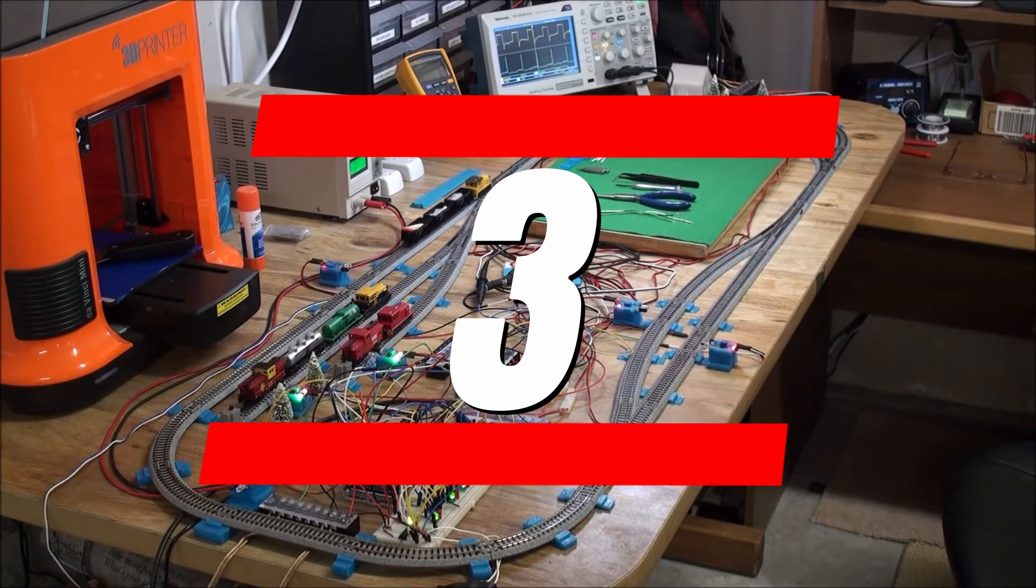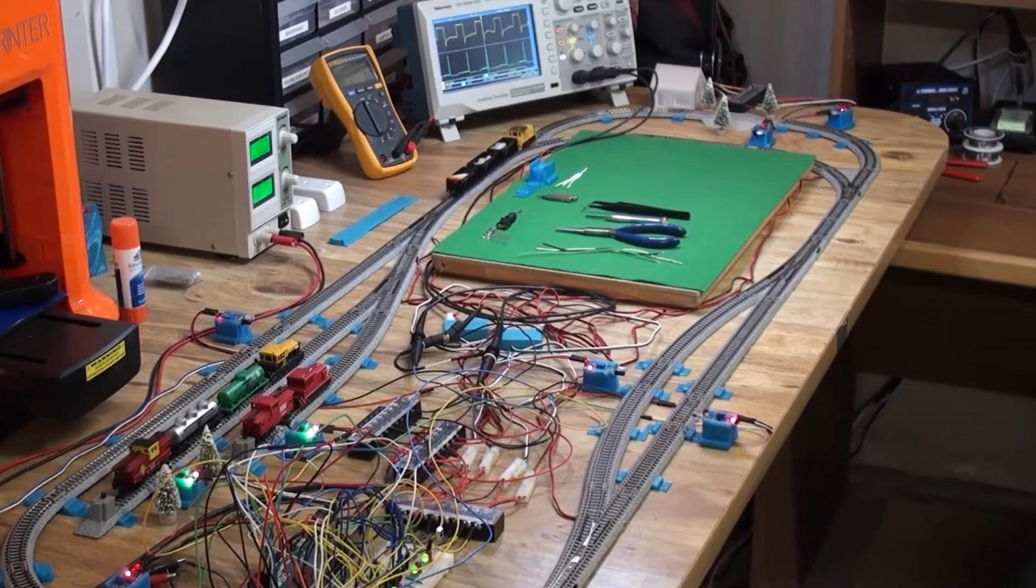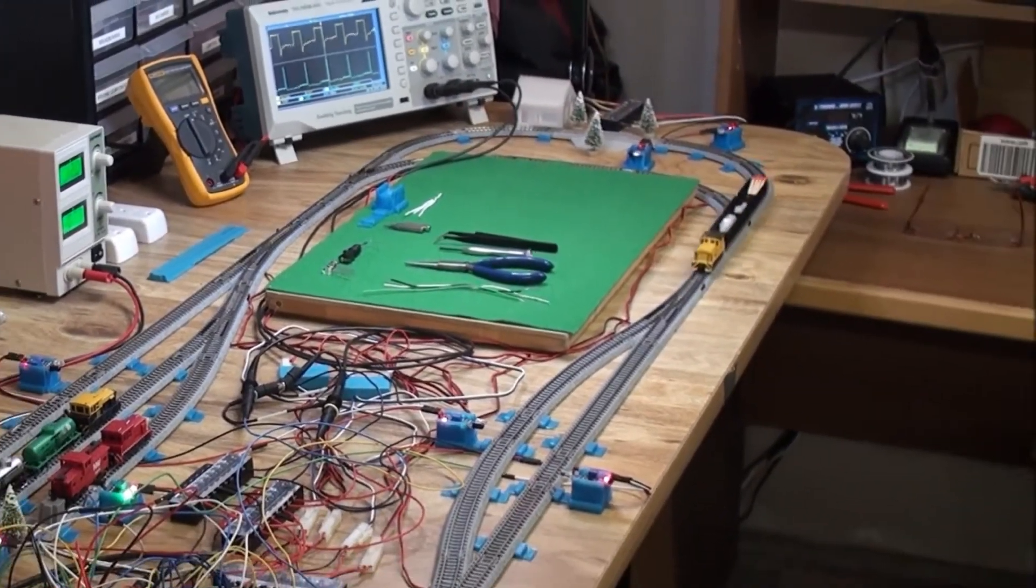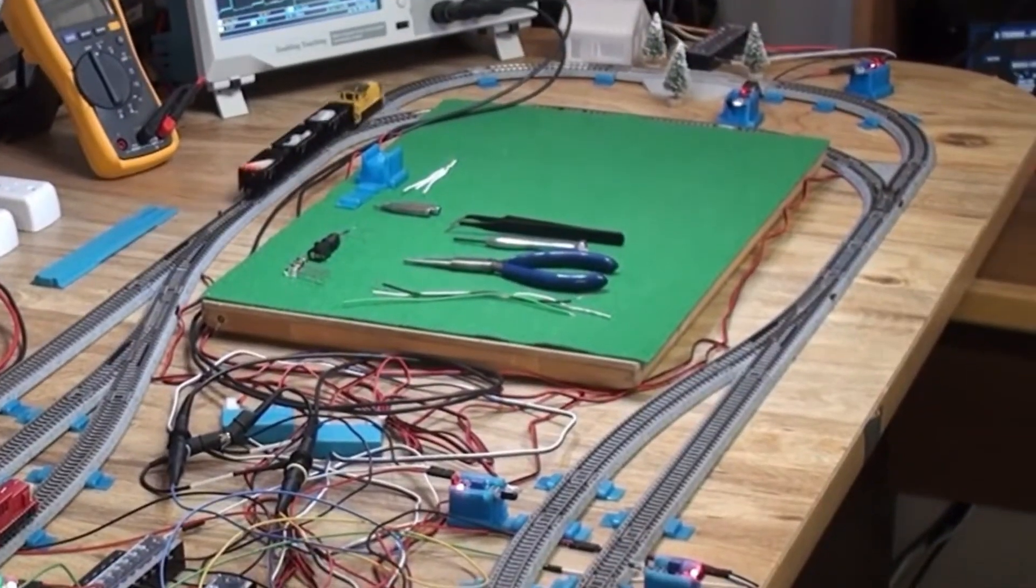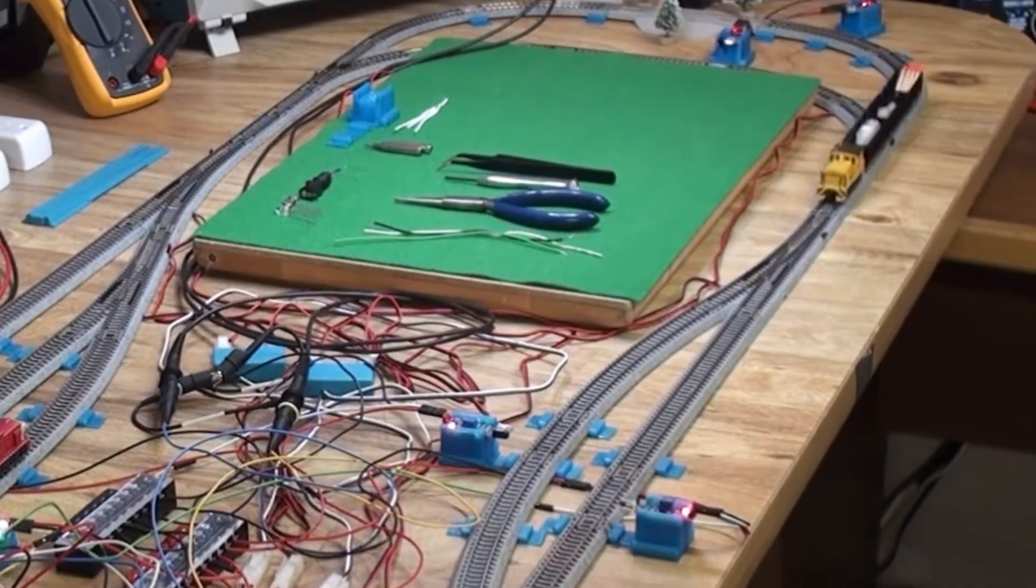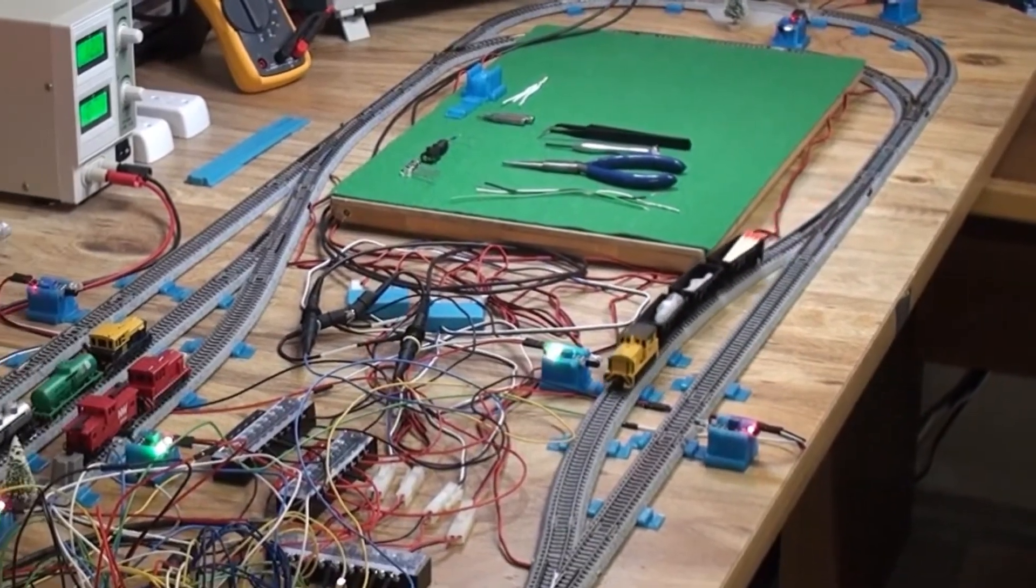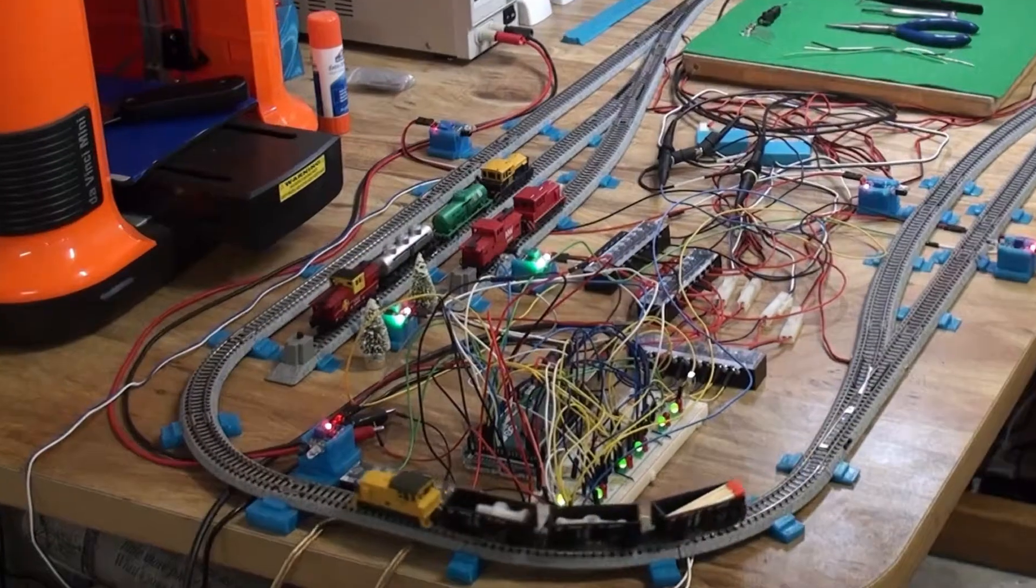Our third project is a fully autonomous railway guidance system powered by Arduino. Using a miniature version of rail tracks and trains, we've installed infrared sensors to detect train movement at specific points along the track.